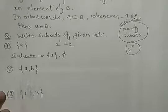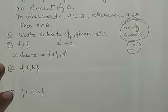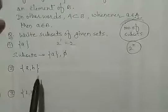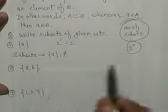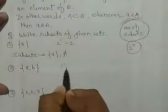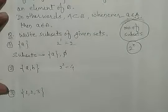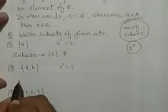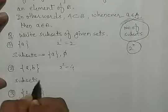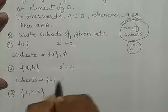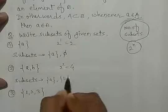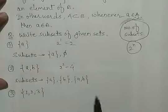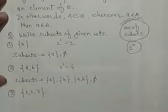और फिर बाकी आपको elements अलग-अलग करना है. For example, second देखिए — we have a and b, 2 elements are there in this set. So if 2 elements are there, 2 to the power 2 is equal to 4, means we will have 4 subsets. So we will write the subsets: first {a}, then {b}, then {a, b} — वो खुद set उसका subset होता है — और एक ∅.